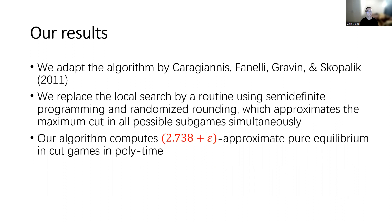Our contribution is that we replace the local search with rounding using semi-definite programming, then perform randomized rounding to get the improvement. This allows us to approximate the max-cut potential function in all possible sub-games within one block simultaneously. The potential achieved is at least 1/2.738 of the optimal, and we get a 2.738-approximate pure equilibrium in polynomial time.